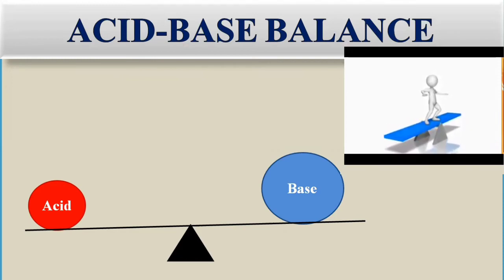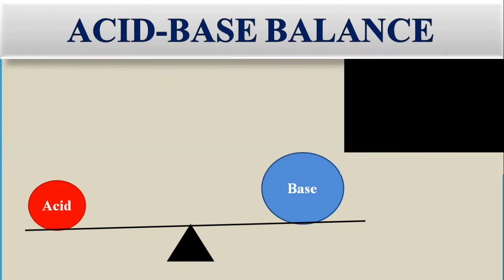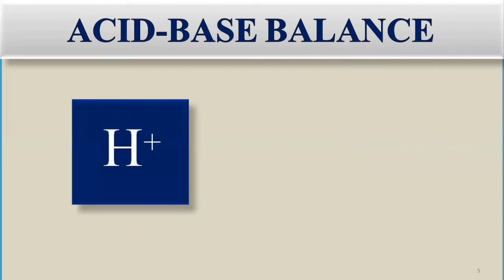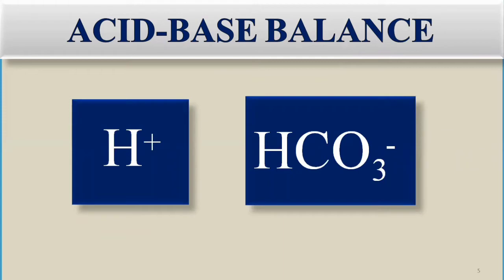To maintain acid-base balance, the two ions that represent acids and bases are the hydrogen ion and bicarbonate ion. The hydrogen ion mostly represents acids, and the bicarbonate ion mostly represents bases. They are present in the human body in a specific concentration range, and any minute imbalance in their concentrations may cause serious lethal and pathological effects.